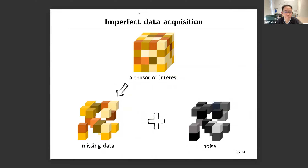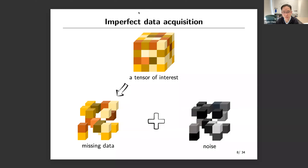Tensor estimation faces a lot of challenges very similar to the low-rank matrix case. For example, in many applications you do not have complete observation of every entry of the tensor — there is a lot of missing data. You still have to try your best to find a good estimate. Also, observations might be corrupted by random noise, and we need to find the true signal in the presence of that noise. These are common challenges in statistical estimation, and the tensor case is no exception — except it might be even harder.